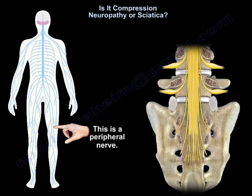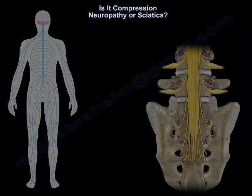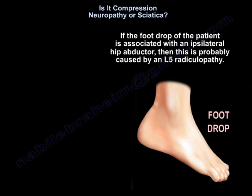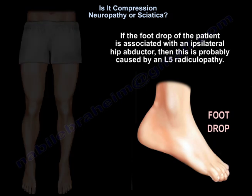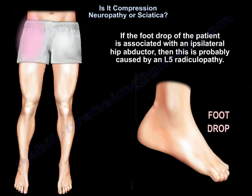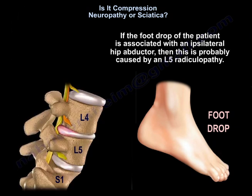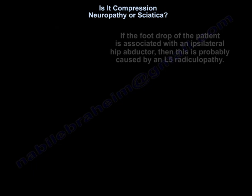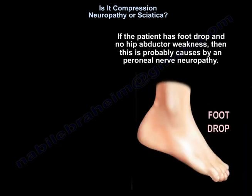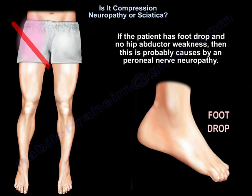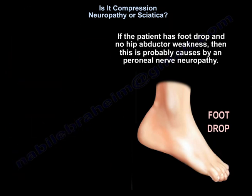This distinction — peripheral nerve versus nerve root — is key. If the patient's foot drop is associated with ipsilateral hip abductor weakness, this is probably caused by an L5 radiculopathy. If the patient has foot drop with no hip abductor weakness, this is probably caused by a peroneal neuropathy.